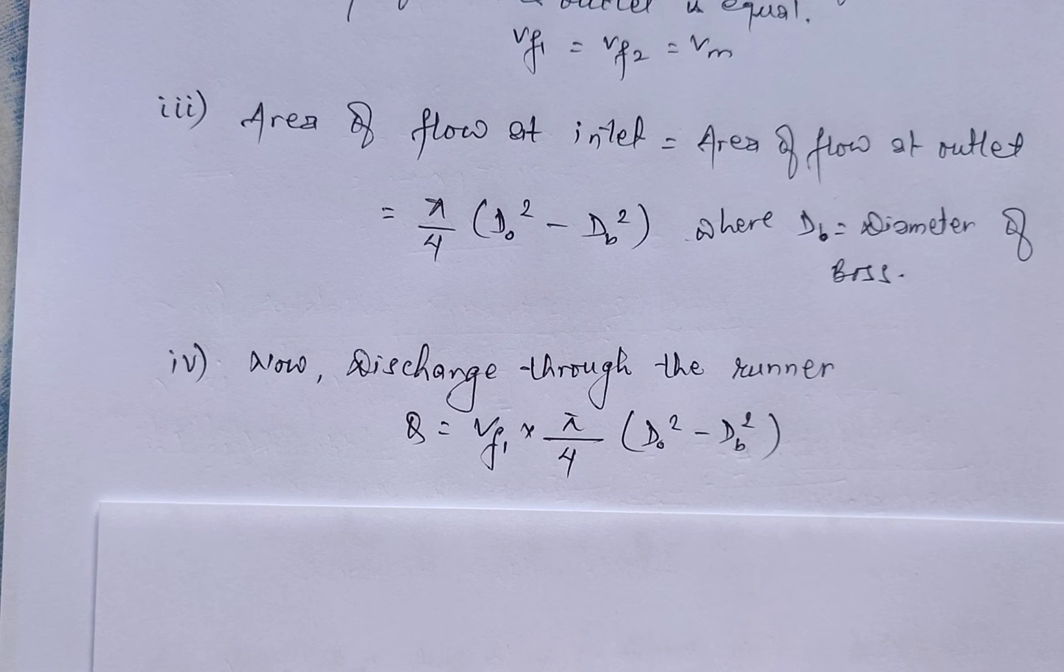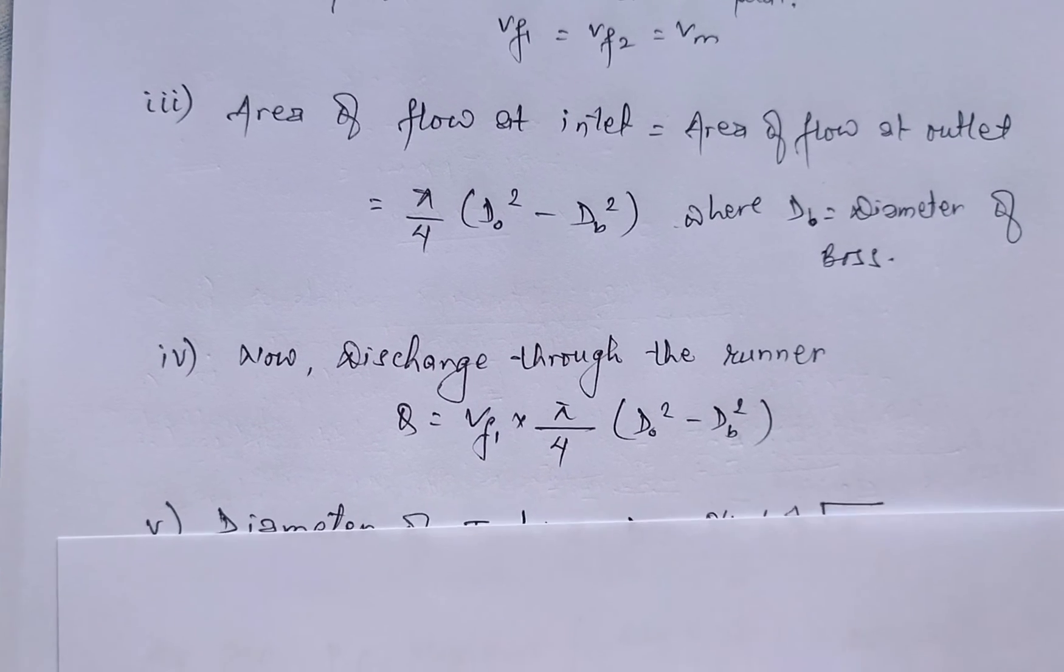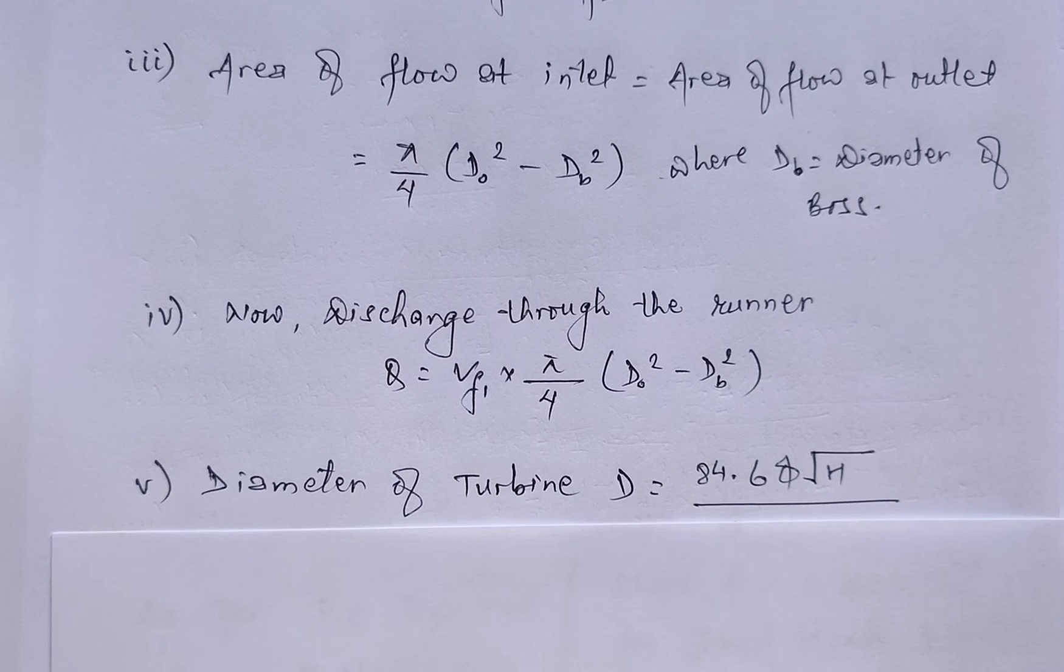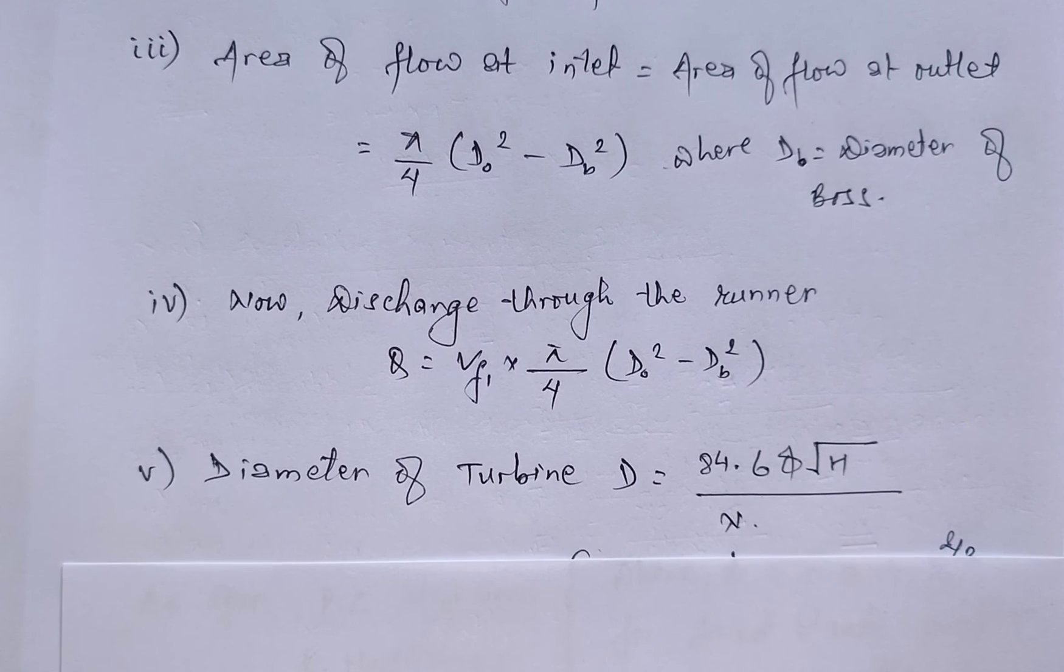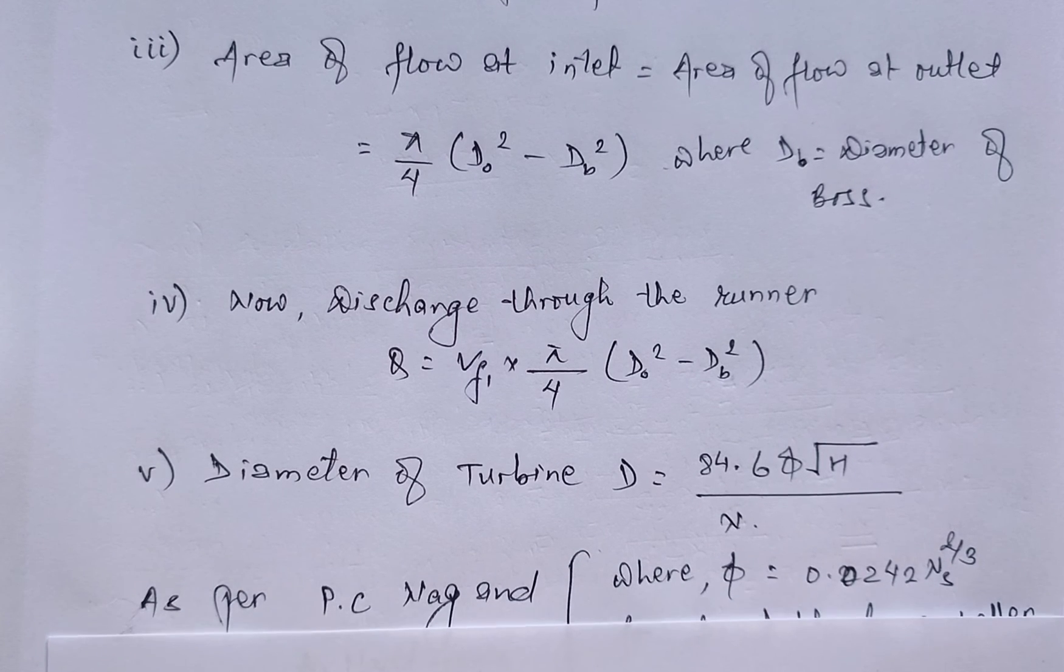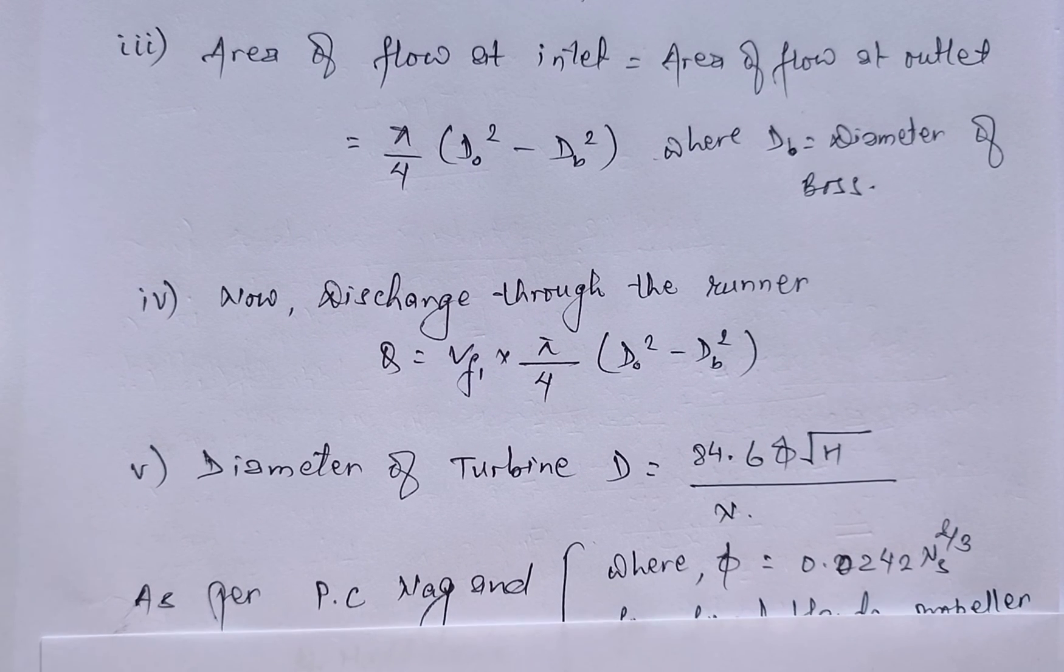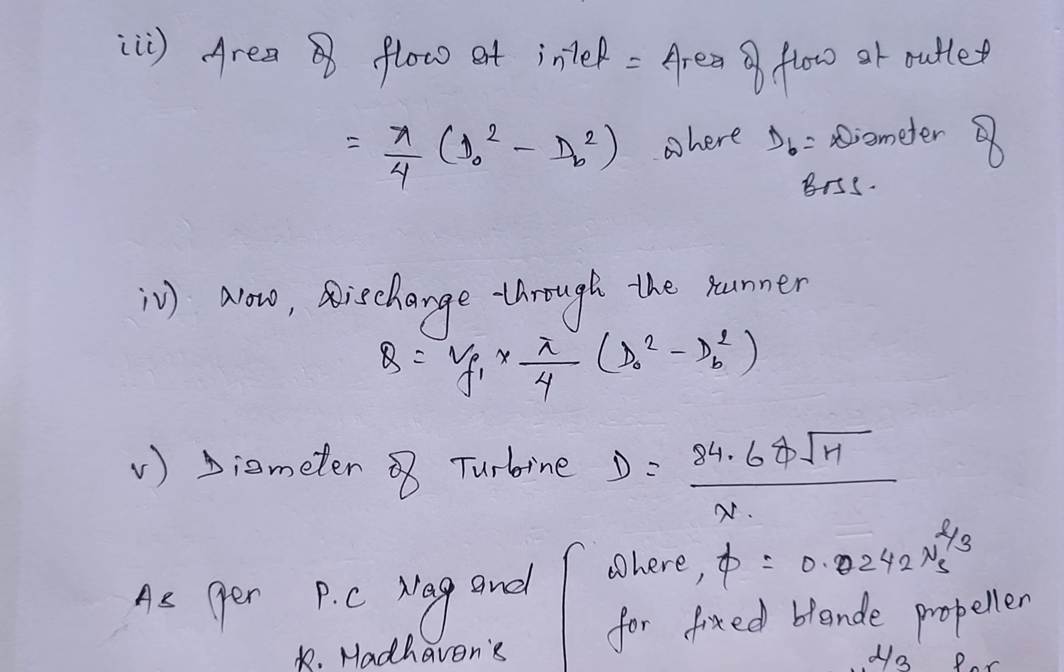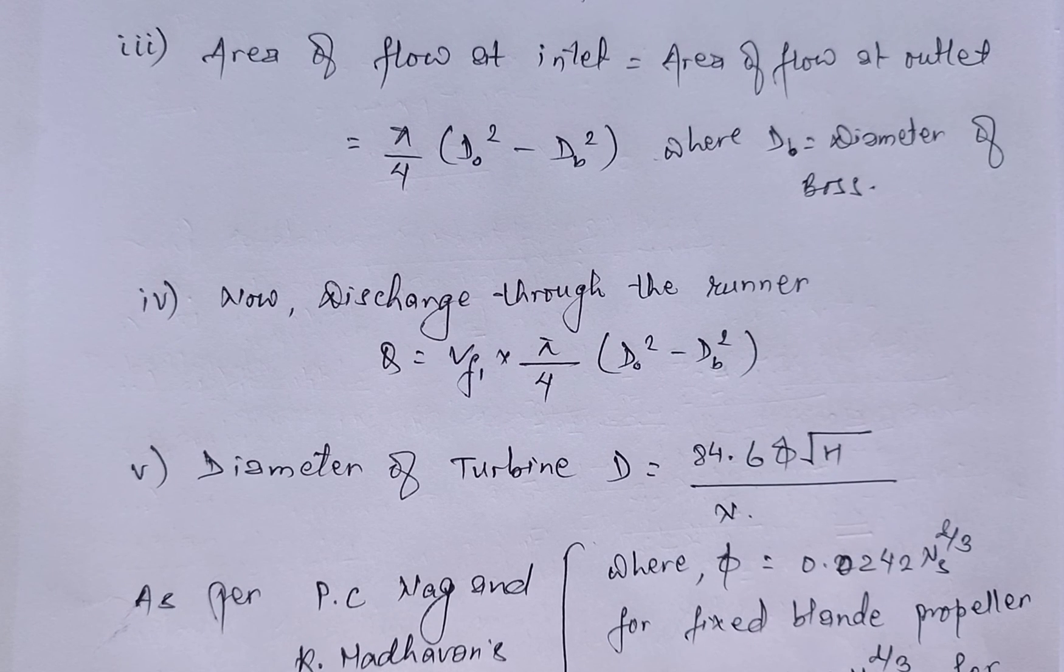Fifth, diameter of turbine D = 84.65√(H/N) divided by φ, as per P.C. Nag and K. Madhavan's formula, where φ = 0.0242 × Ns^(2/3) for fixed blade propeller.